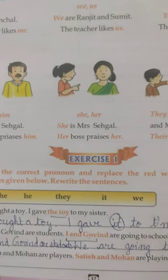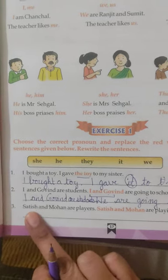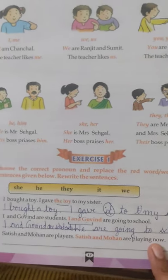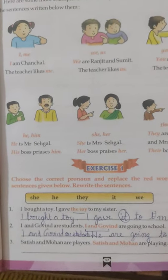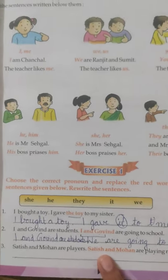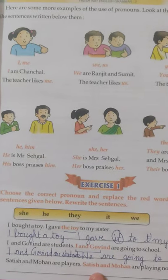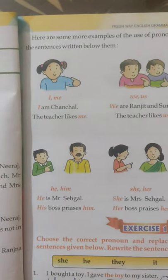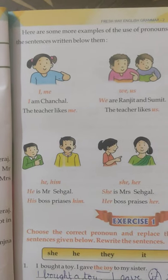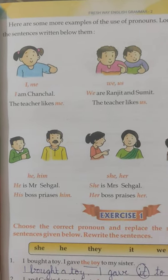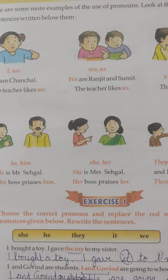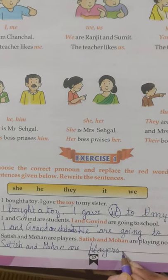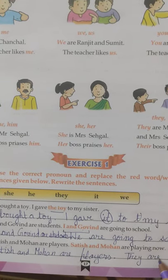The third sentence is: Satish and Mohan are players. Satish and Mohan are playing now. There are two names — Satish and Mohan — but the speaker is not included here; 'I' is not there. For these two different names, what we are going to use is 'they'. So: Satish and Mohan are players. They are playing now.